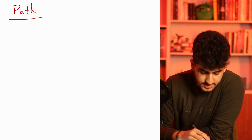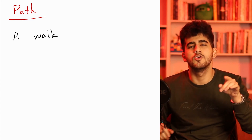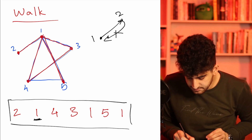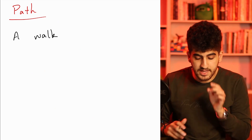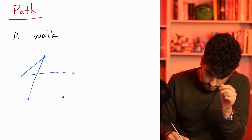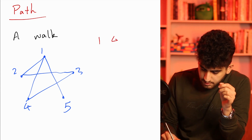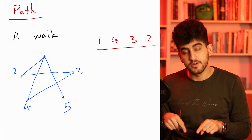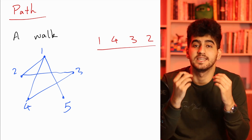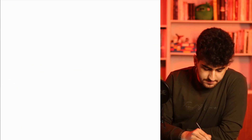A path in a graph is just a walk that does not have duplicated vertices or edges — we can move to each edge and each vertex only once. So a walk like 2, 1, 4, 3, 1 is not a path because it visits vertex 1 many times. For instance, in this graph, 1, 4, 3, 2 is a path, but 1, 4, 3, 2, 3 is not a path because it visits the same vertex more than once. So a path is a walk where you can visit each vertex and each edge at most once.